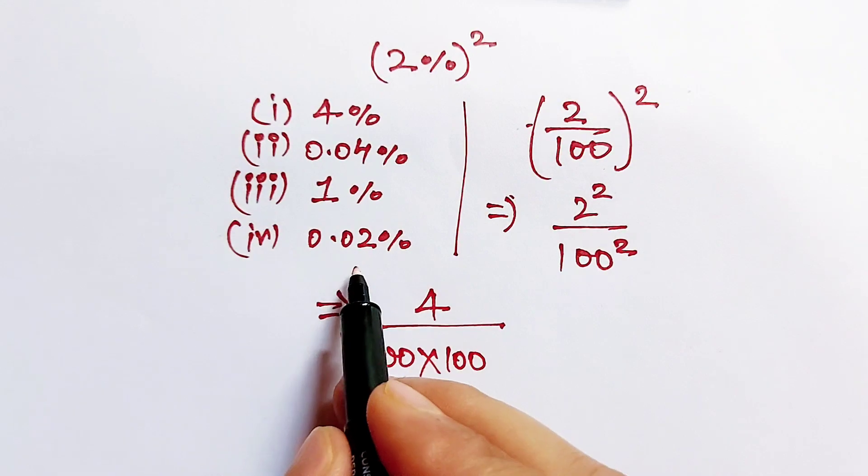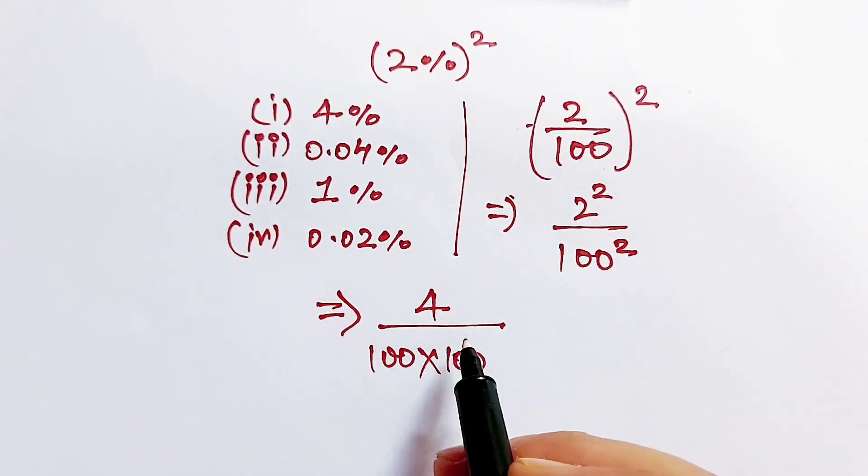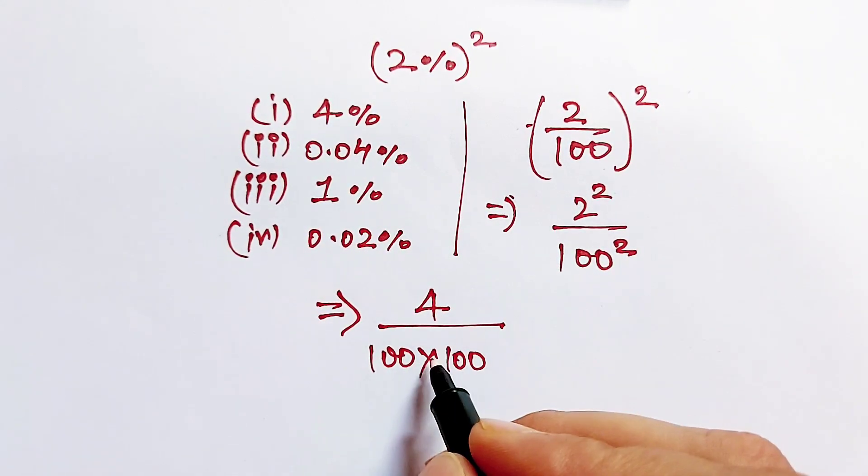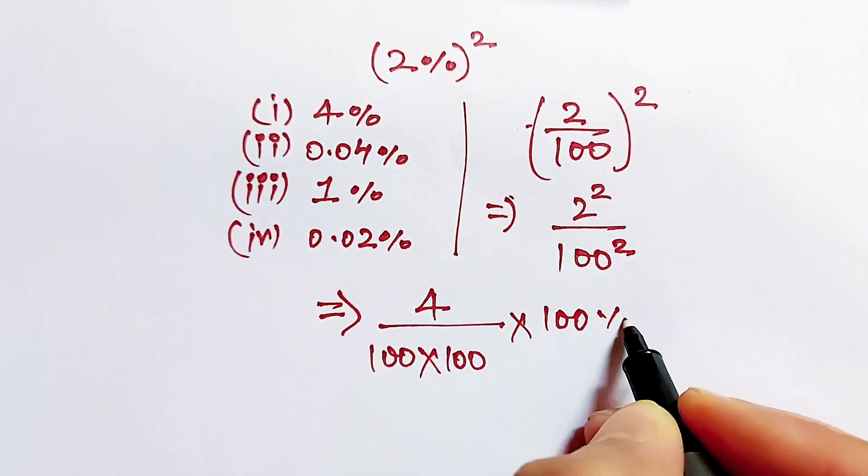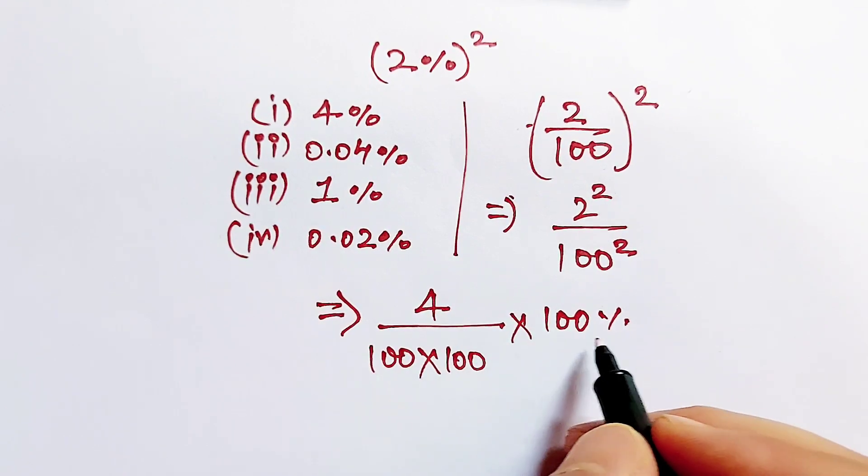Now all the options are in percentage, then we multiply this equation by 100 percent to make our answer in percentage.